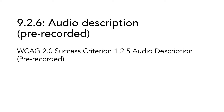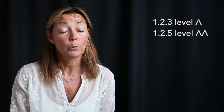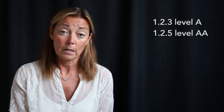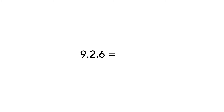9.2.6, audio description pre-recorded, is based on WCAG 2.0 success criterion 1.2.5. In this requirement, it's obvious that the EN standard is based on another standard. In WCAG, success criteria 1.2.3 and 1.2.5 are presented on different levels — Level A and AA respectively — but in the EN standard this gets a bit confusing because the requirements are presented separately but on the same level. So this is the same as requirement 9.2.4, with the only difference that you need to have the audio description; it is not good enough to have an alternative text version. If you meet this requirement, you will also meet 9.2.4 at the same time.